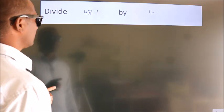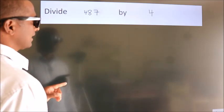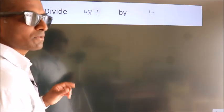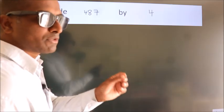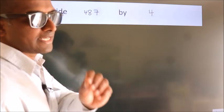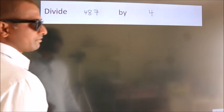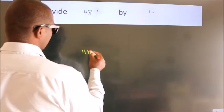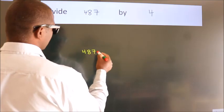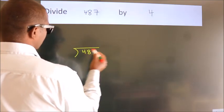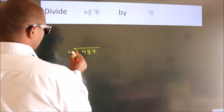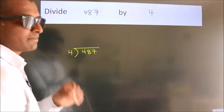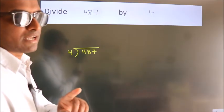Divide 487 by 4. To do this division, we should frame it in this way: 487 here, 4 here. This is your step 1.